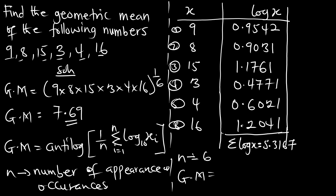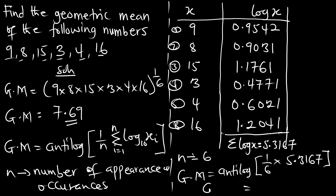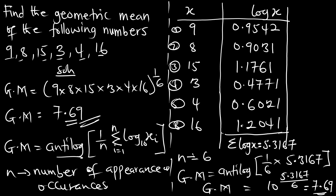Therefore GM equals anti-log of (5.3167 divided by 6), which gives us 7.69 — the same result as using the simple formula. As mentioned, in order for grouped data to be easier, you have to get used to this logarithm formula, but you can also use the simple formula for objective purposes.